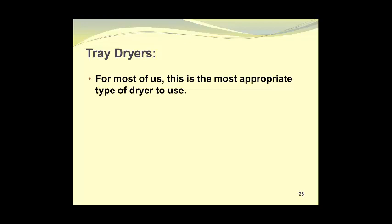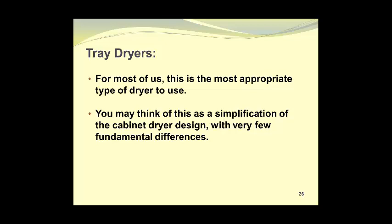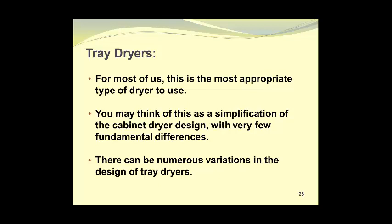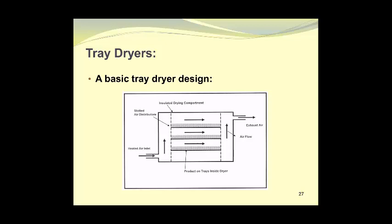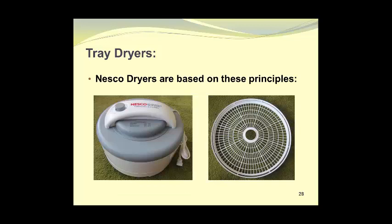Tray dryers are the most appropriate type of dryer for most of us to use. You may think of this as a simplification of the cabinet dryer design with very few fundamental differences. There can be numerous variations in the design of tray dryers. Here we see a basic tray dryer design. Heated air enters through an inlet at the bottom left-hand corner. The slotted air distributors ensure uniform air distribution across the three trays of material being dried. The air then exits through the exhaust stack at the opposite end of the dryer.